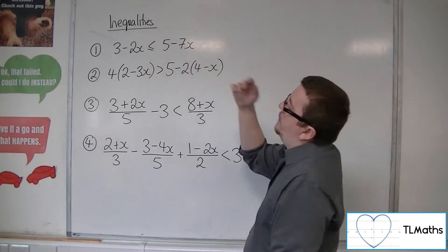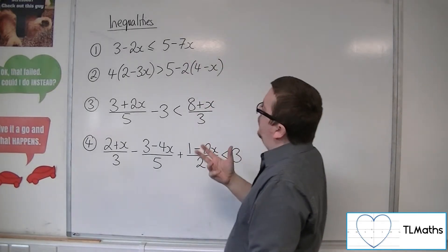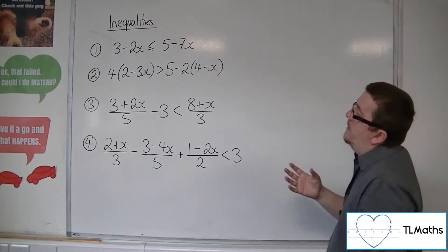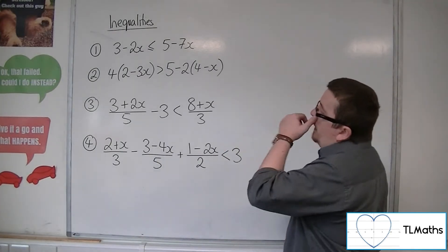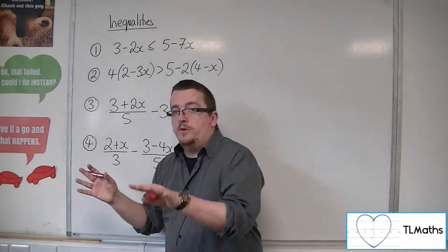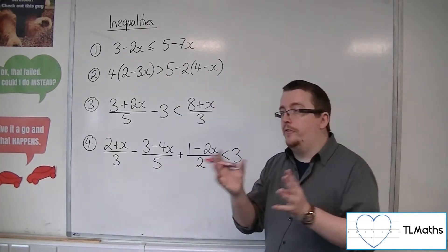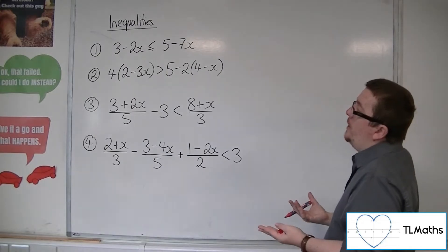So if we have a look at number one, we've got 3 minus 2x is less than or equal to 5 minus 7x. So in this, really what you want to do is you want to move the x's onto one side of the inequality, much like you would an equation.